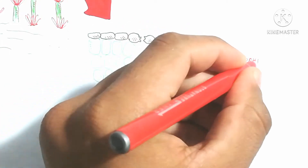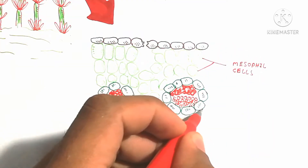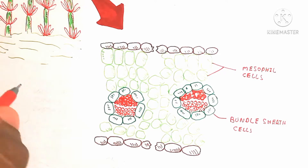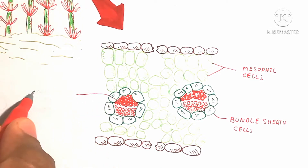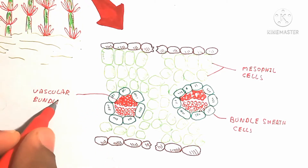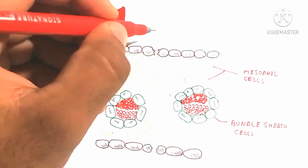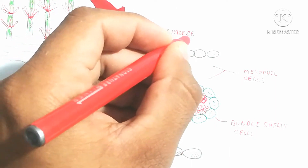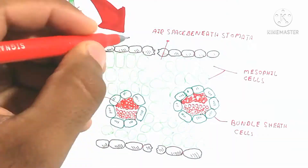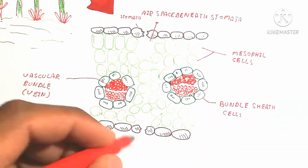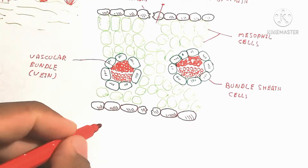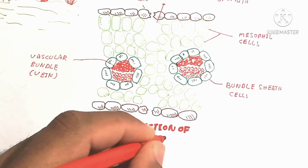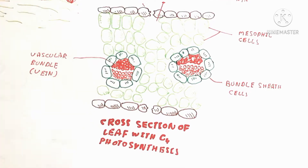There is upper epidermis and lower epidermis containing air space beneath stomata. Stomata are present in the cuticle on both upper and lower sides. The stomata are used for releasing oxygen. There is the mesophyll cell and the bundle sheath cell, which is surrounded by the vascular bundle.